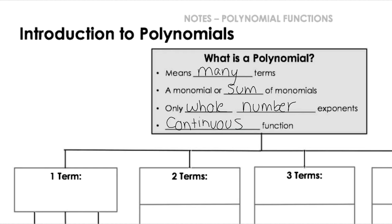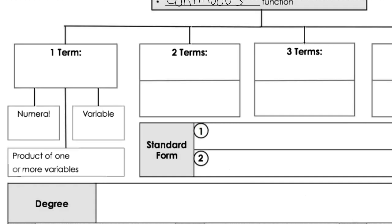Now we're going to get into some examples and talk about the names we use for them. If a polynomial has one term, we call it a monomial. Mono means one, and then it has that 'nomial' for the terms. Some polynomials that have one term could be just a number — a numeral monomial — like three or any number.